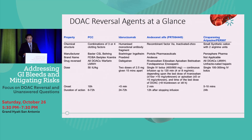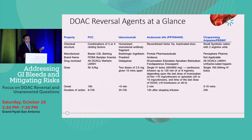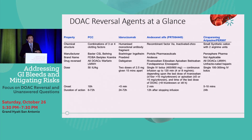Looking at DOAC reversal agents at a glance: of the current agents available, only andexanet is FDA approved to reverse factor Xa agents. Idarucizumab is specific only for Pradaxa. The PCC 3 and 4 complexes are not FDA approved for factor Xa reversal but were used prior to the advent of andexanet. And ciraparantag is currently in phase 2 trials — not commercially available, but it's a small synthetic cation with two arginine units that binds permanently to anti-factor Xa DOACs, rendering them ineffective. Definitely something to look forward to in the future.